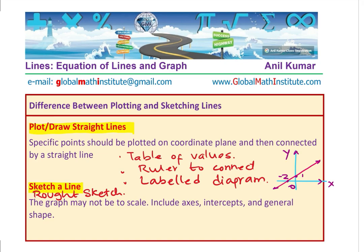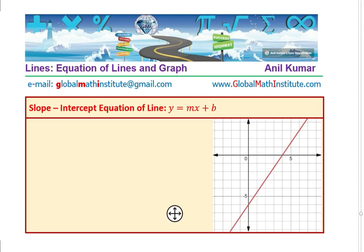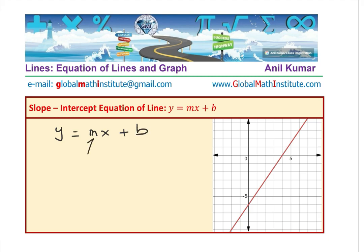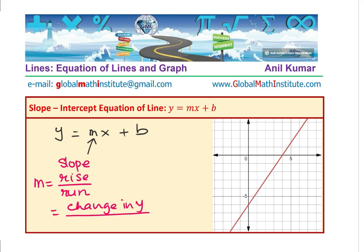Before our first example, we should understand the slope-intercept form of a line. When we write the equation of a line as y equals mx plus b, the coefficient of x — which is m — is the slope. Slope m is rise over run, meaning change in y over change in x, also written as delta y over delta x. You can find slope from a given graph by identifying two good points and forming a right-angle triangle.